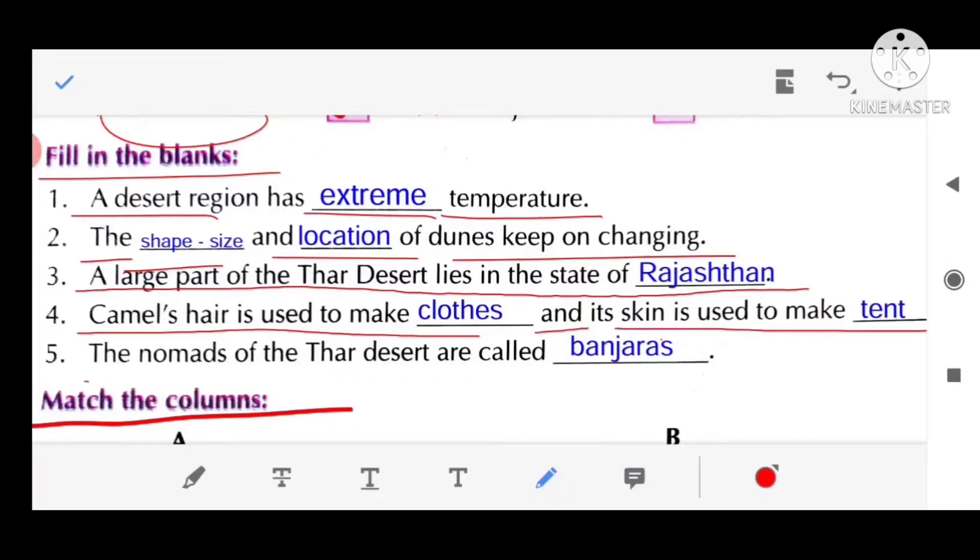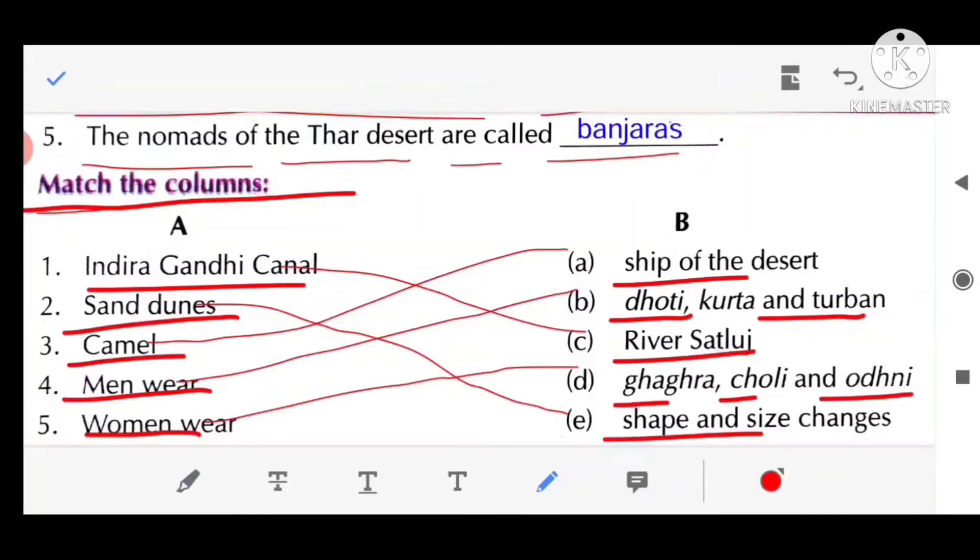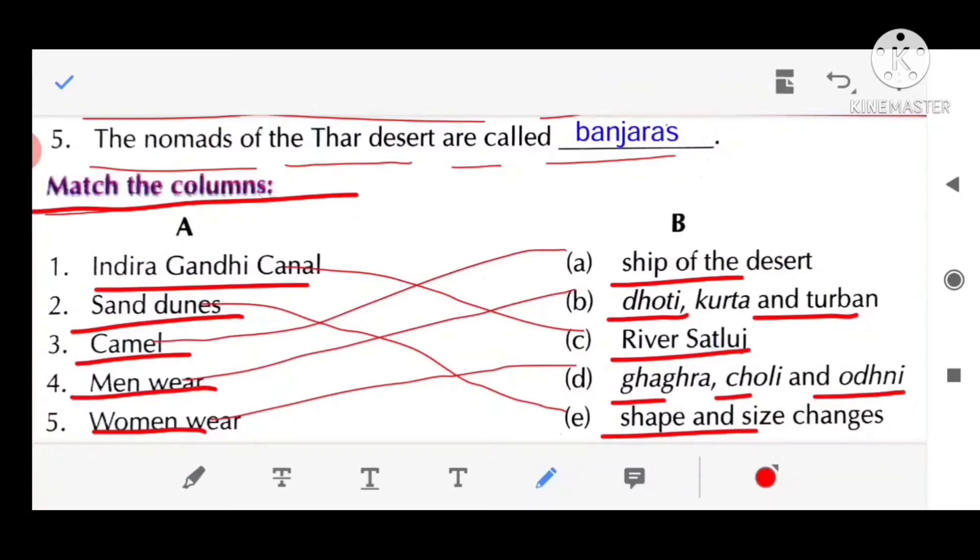The nomads of the Thar desert are called banjaras. Match the columns. Indira Gandhi canal, river Sutlej.